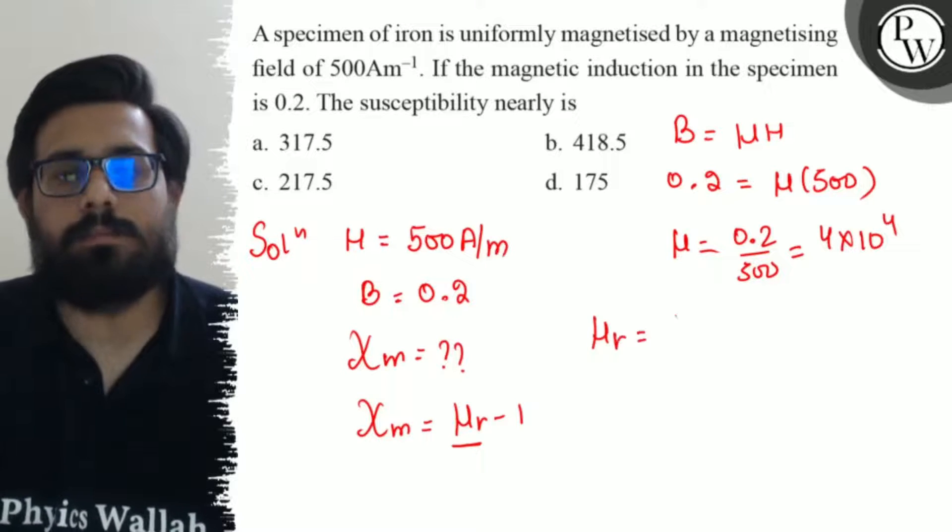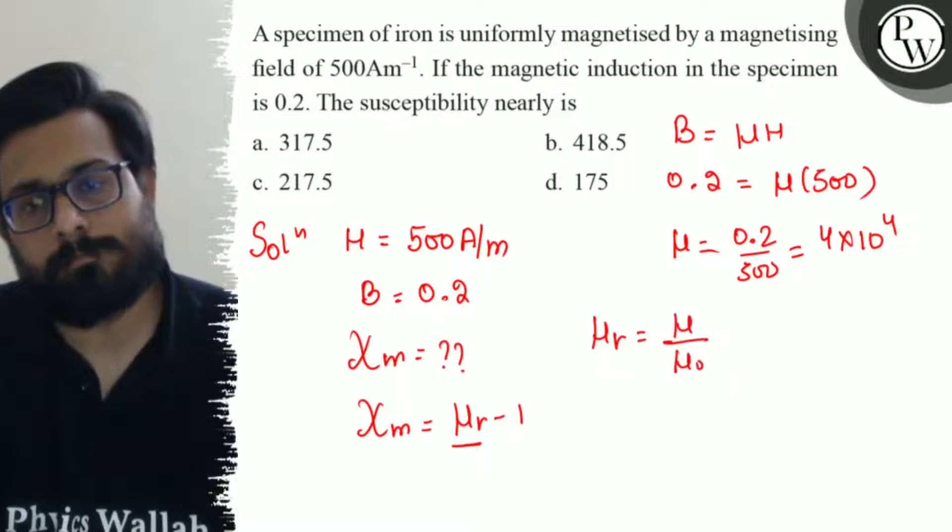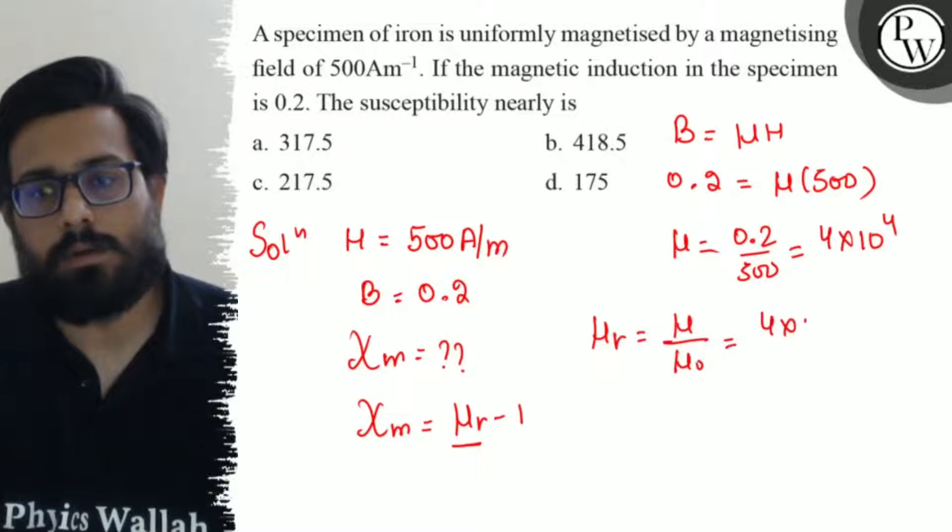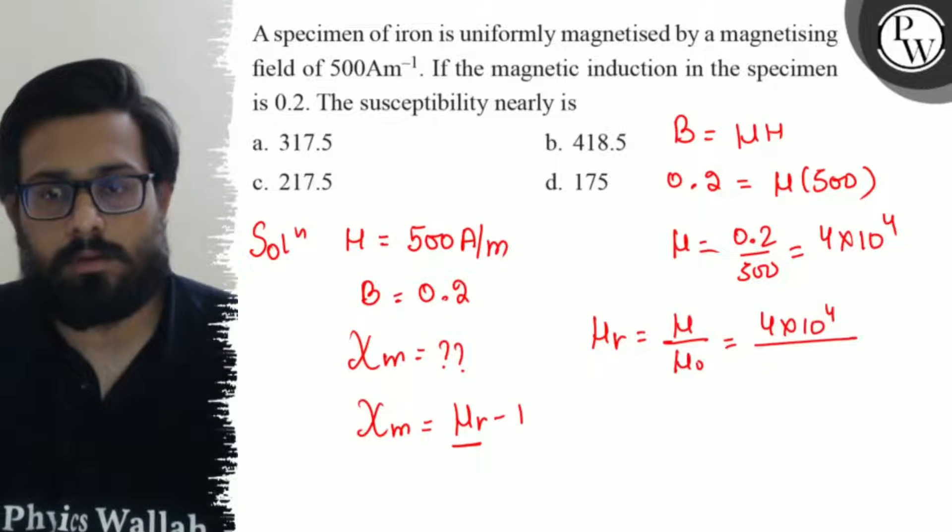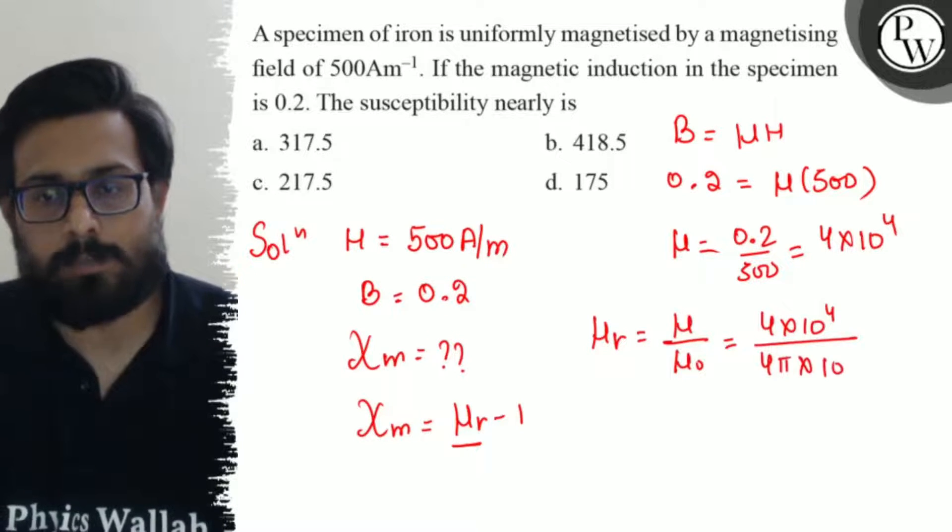μR can be written as μ/μ0. So μR = (4 × 10^-4)/μ0, where μ0 = 4π × 10^-7.